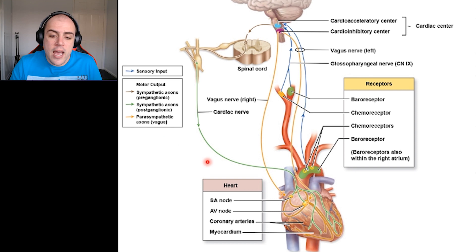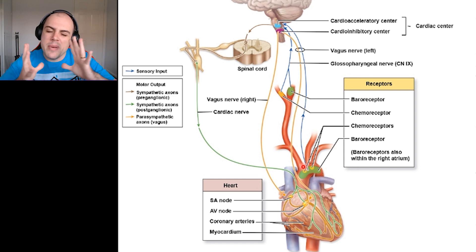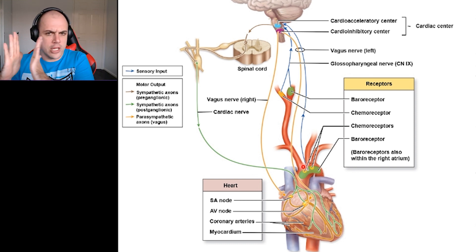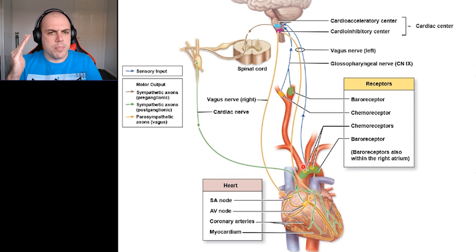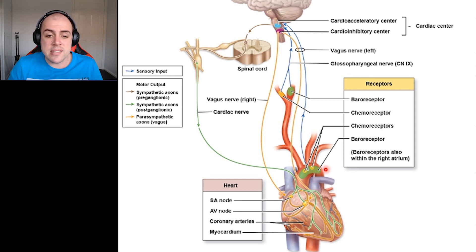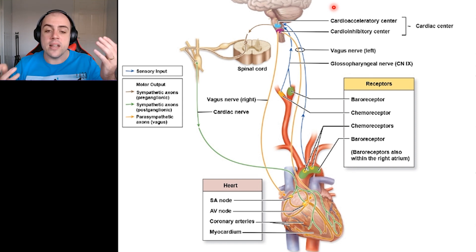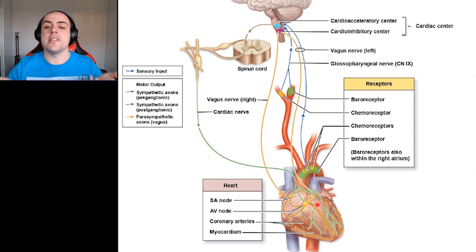For instance, if we're measuring the amount of force and stretch being applied to the aortic arch and it isn't very high, our receptors signal that blood pressure may be too low. A signal is then sent up to the cardio accelerator center, which sends signals down to the heart to increase heart rate or increase contractility in order to raise blood pressure.